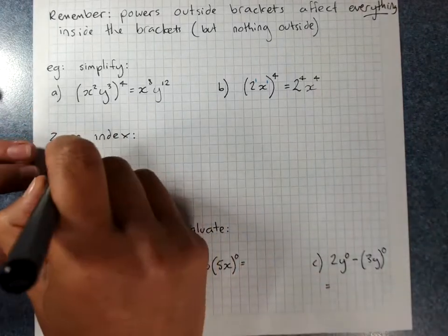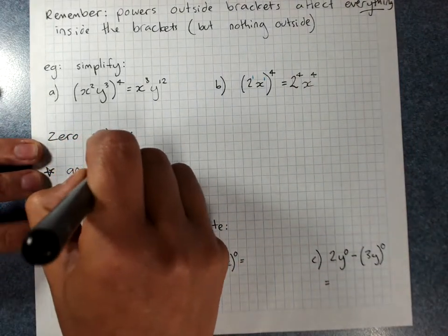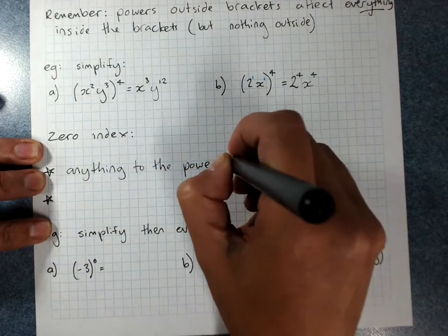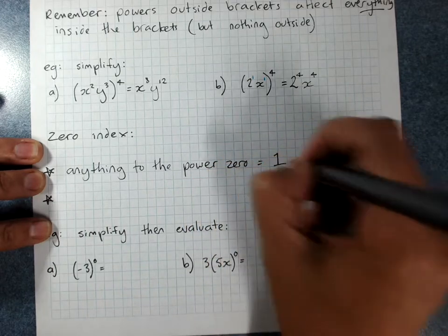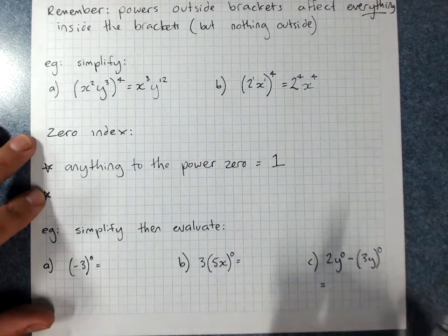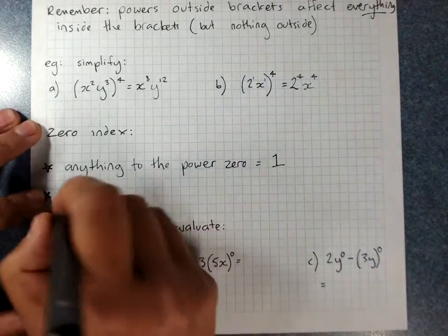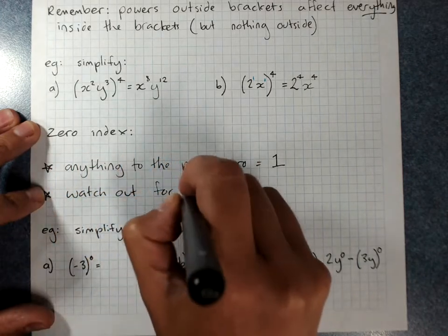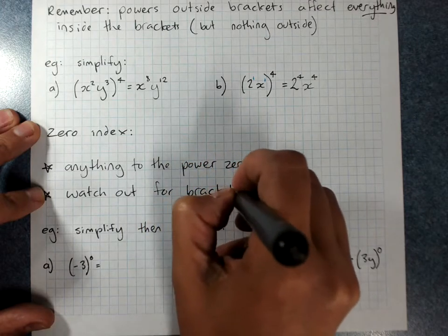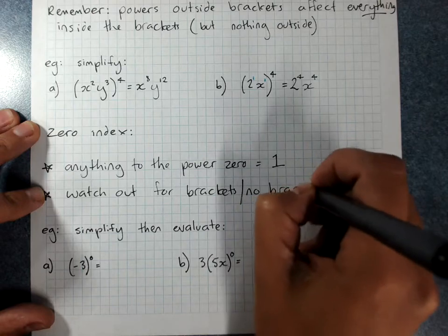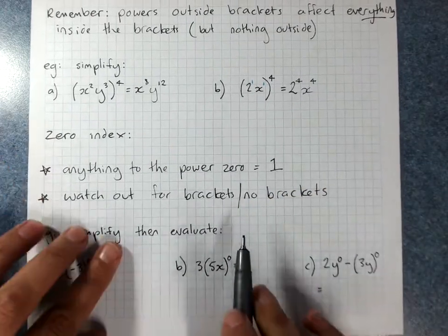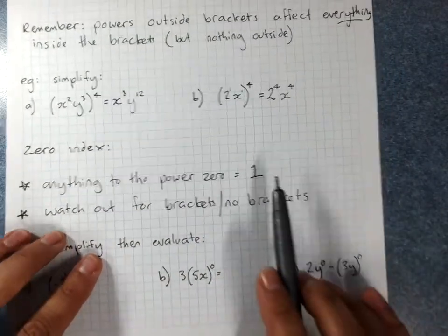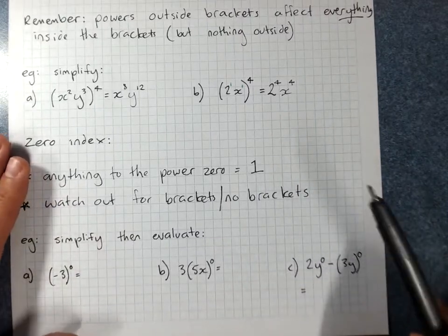The zero index: anything to the power 0 equals 1. But you've got to be really careful — watch out for brackets or no brackets. Because remember, powers outside brackets affect everything inside the brackets, whereas powers without brackets just affect the one thing they come after.